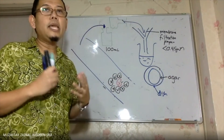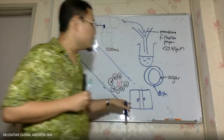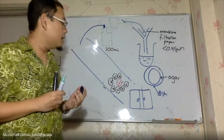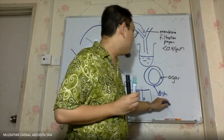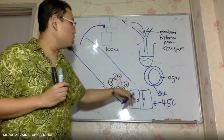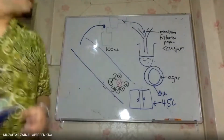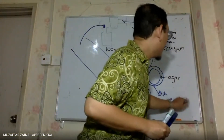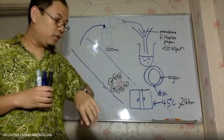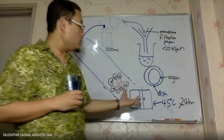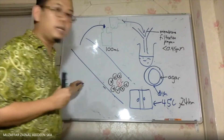The dish with the membrane paper and agar needs to be placed in an incubator. The incubator is like an oven, and for this experiment the temperature is kept at 45 degrees Celsius. You keep the dish in the incubator for 24 hours — that is, one full day.